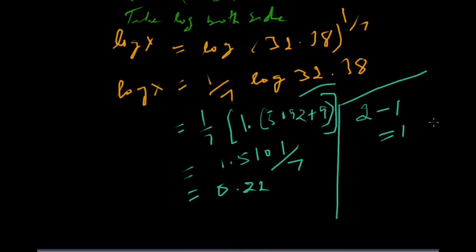Taking antilog both sides, log x cancels and we get x equals antilog of 0.22.